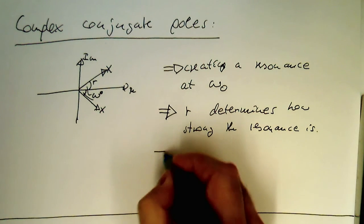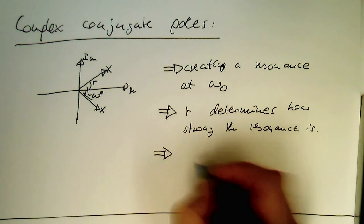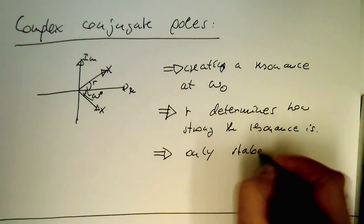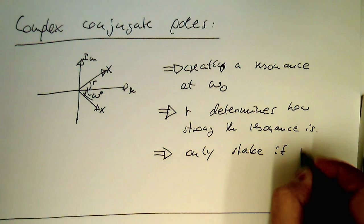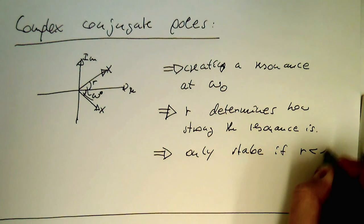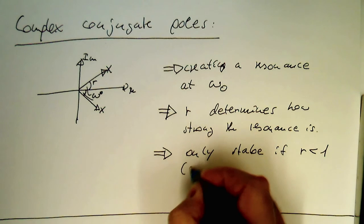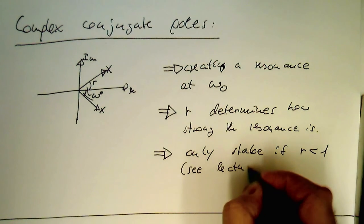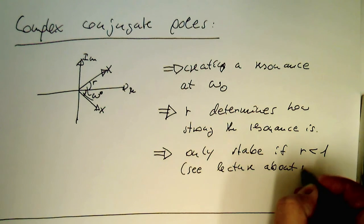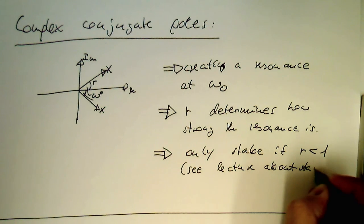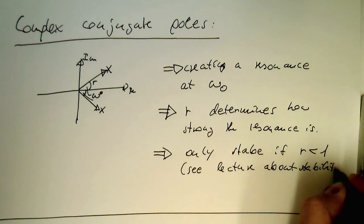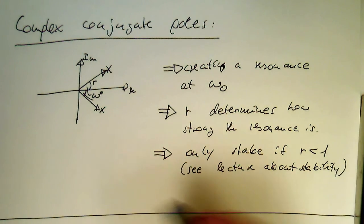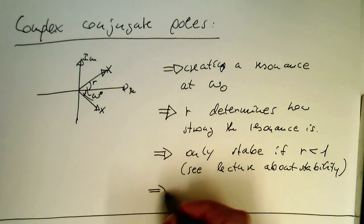And so the radius r determines how strong the resonance is. And obviously the system is only stable if r is smaller than 1. See lecture about stability.